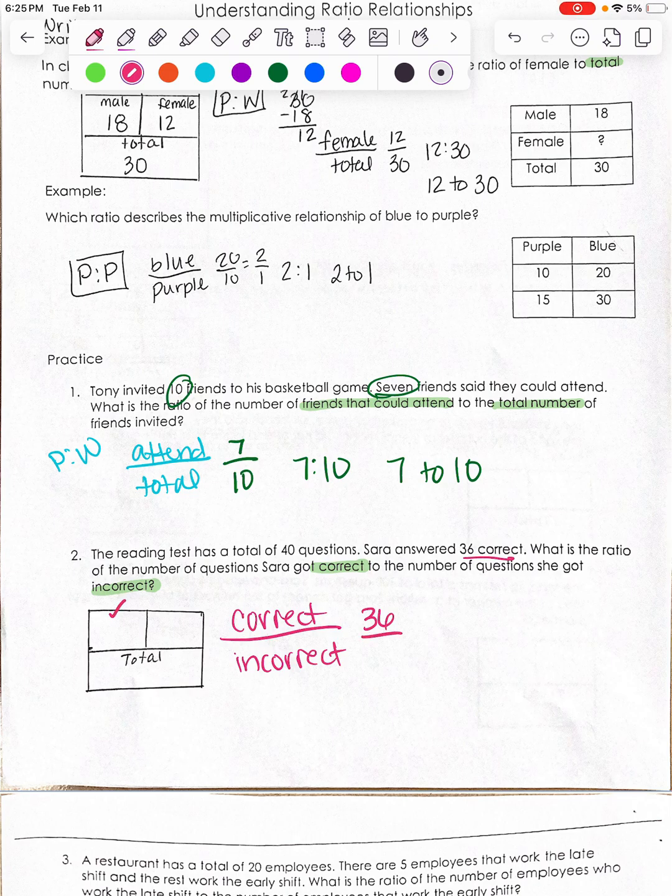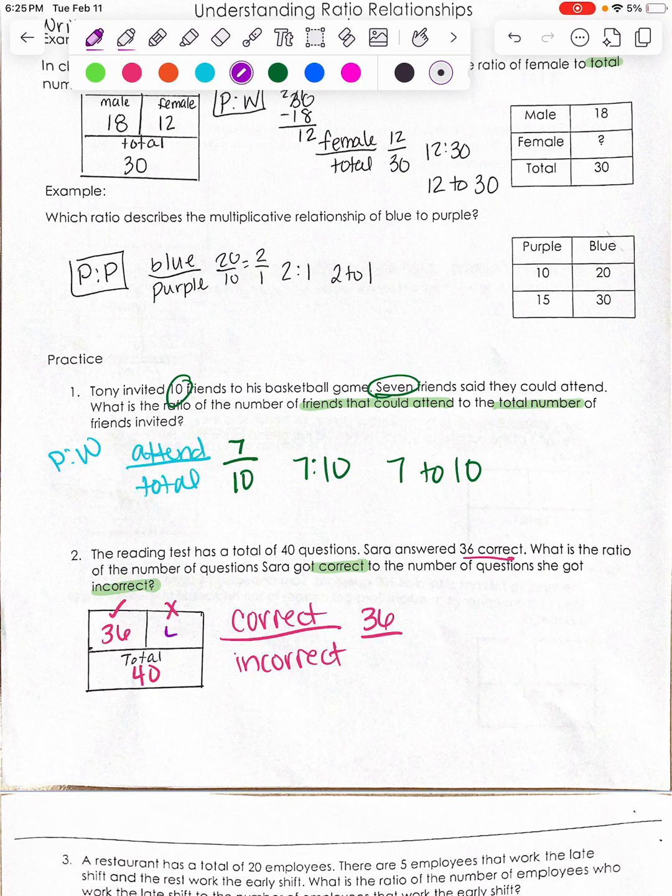So she got 36 correct out of a total of 40. So how many would be incorrect if she got 36 out of 40 correct? That would mean 4 were incorrect.